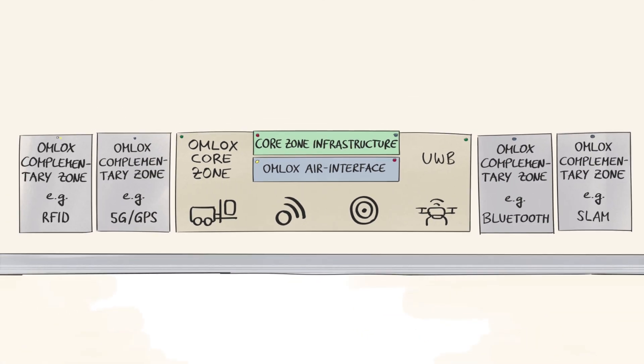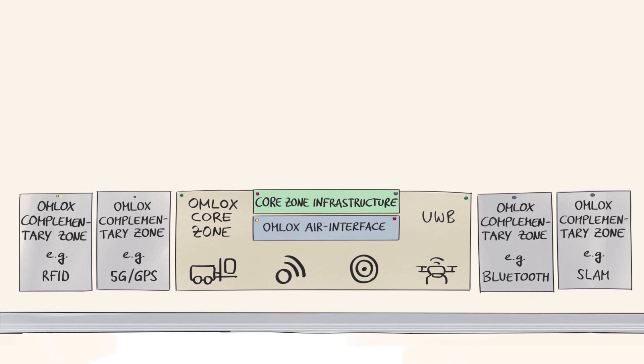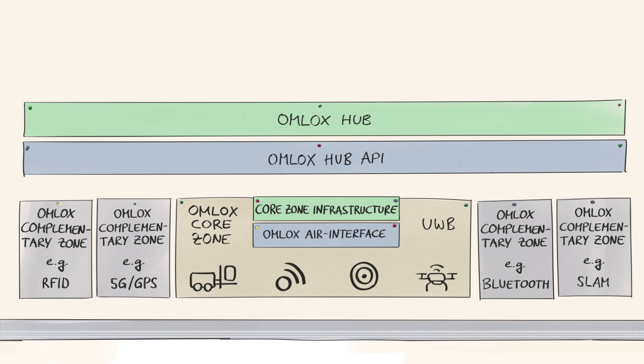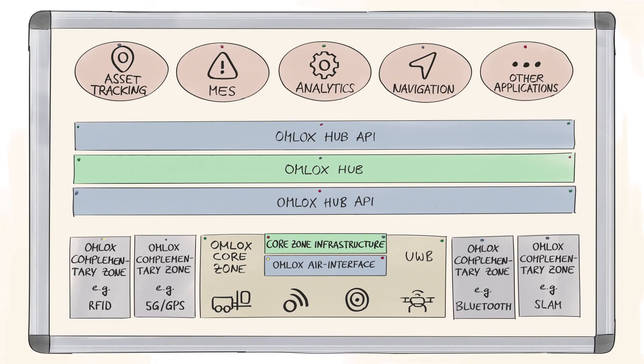In the complementary zones, other locating technologies like RFID, GPS and 5G can be integrated as well. The OMLOX Hub allows seamless access to locating data, no matter which locating technologies are used. With the OMLOX Hub API, it's possible to integrate any desired industrial application.